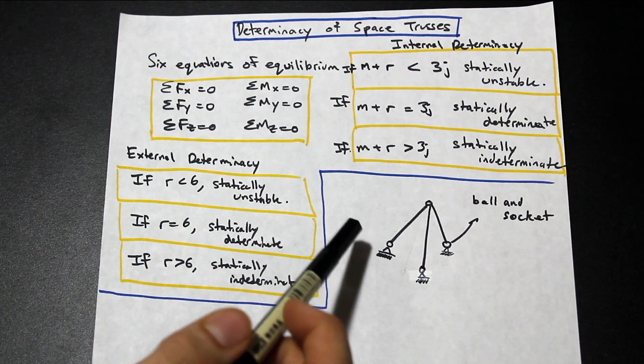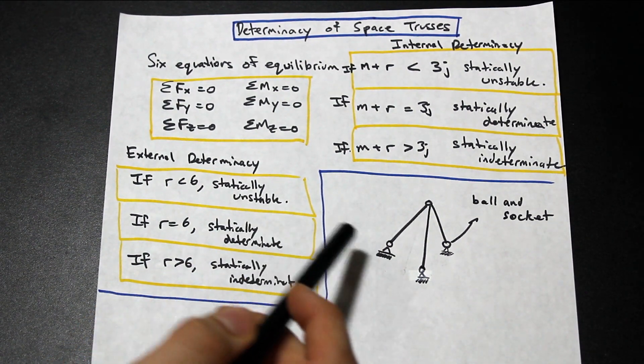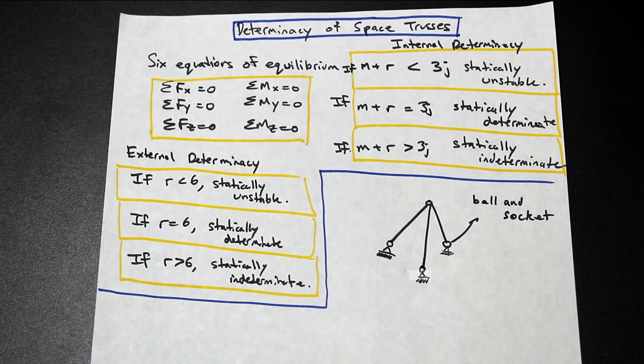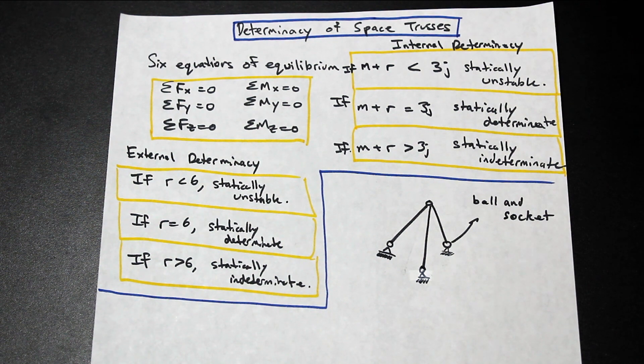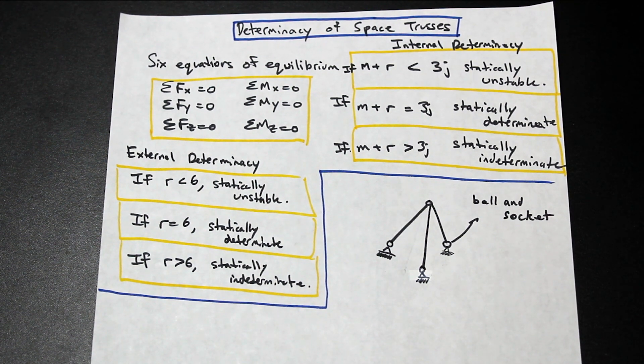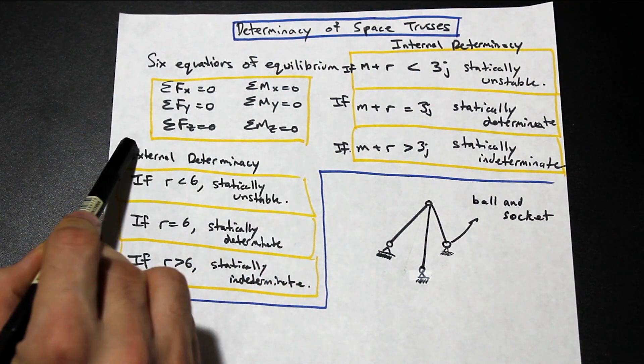External determinacy, I don't know if you're going to cover that or not, but if you do, it's fairly simple. The idea is if a truss doesn't have, or a space truss doesn't have six reactions, then it can't resist a force in X, Y, or Z, or possibly X, Y, and Z, because there aren't enough reactions in order to resist a force in any of those directions or a moment.